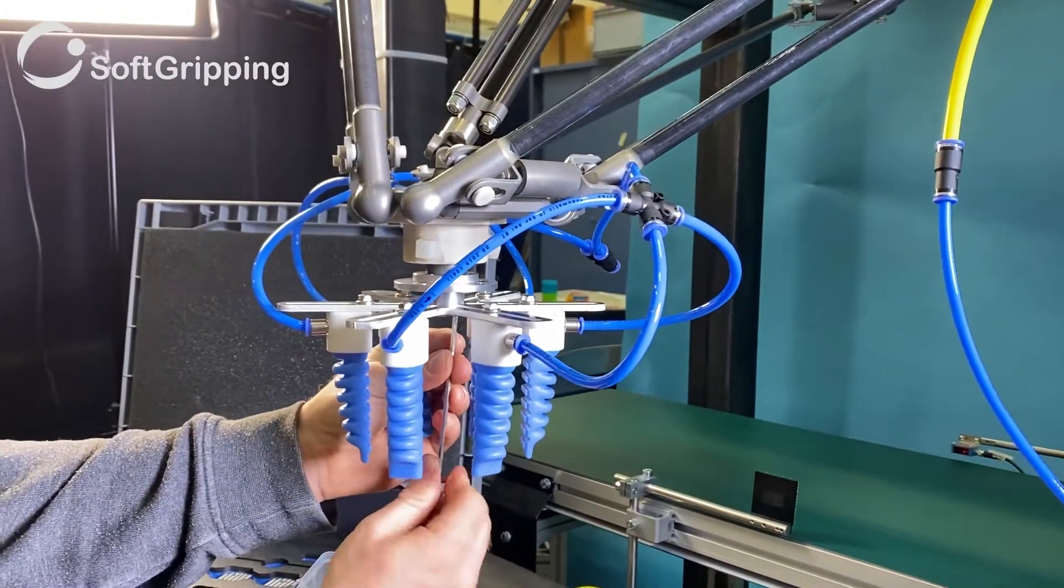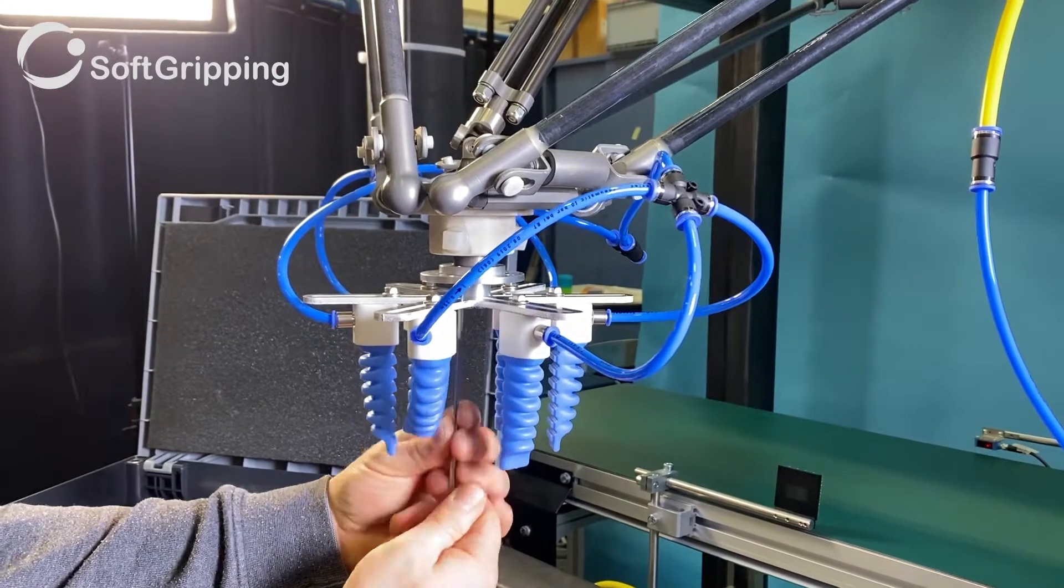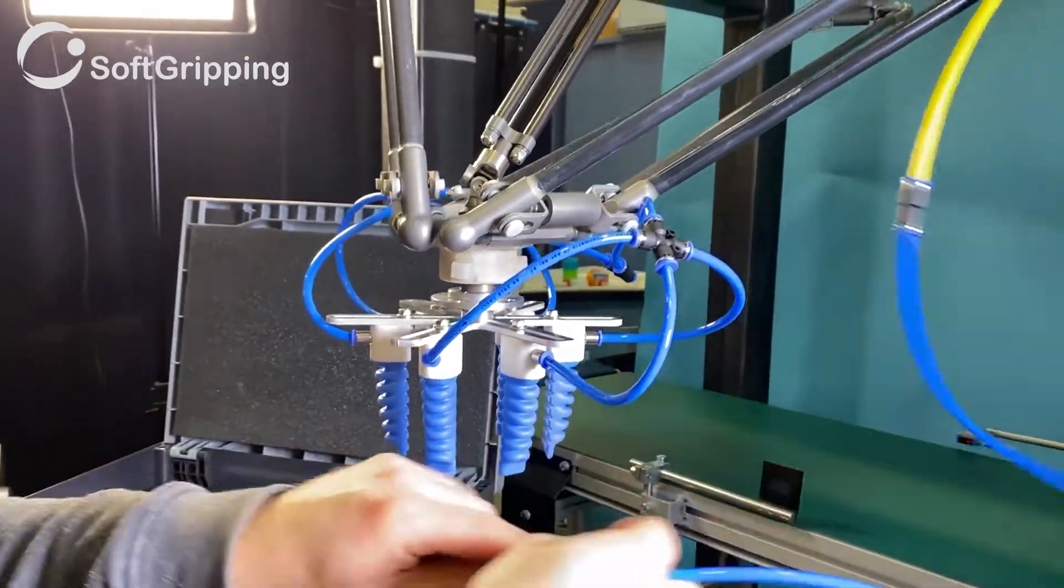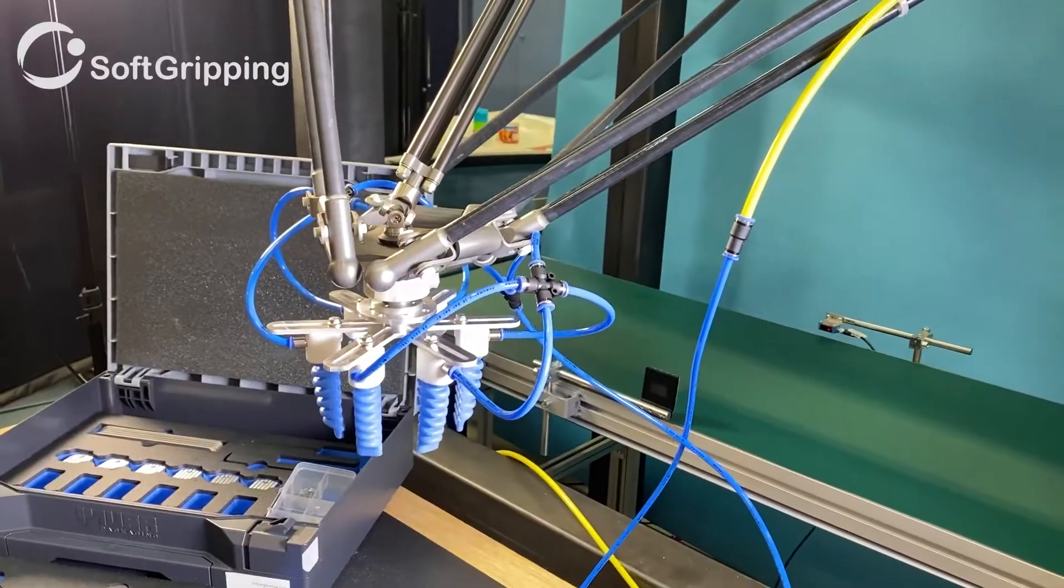A few last screws that we have to deal with and we are ready to test our gripper on the real rack. So connect the tubing and start the operation.